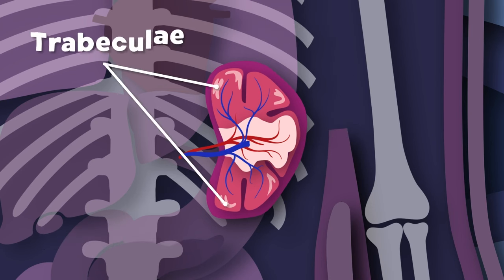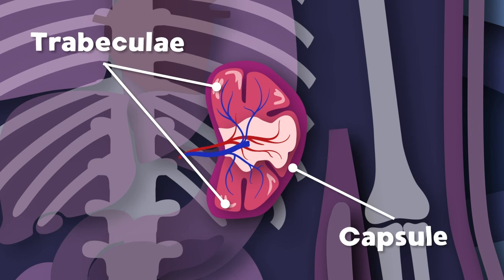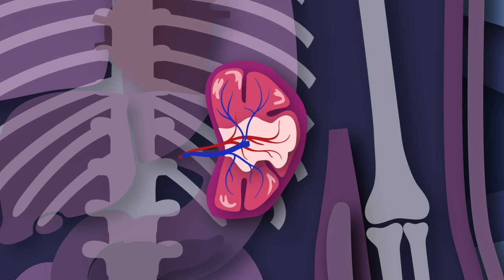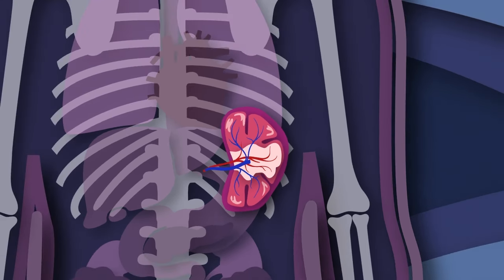The trabeculae of the spleen is the framework within, which is attached to the capsule. It surrounds the spleen and it's thin. Vascular sinusoids are vessels that drain into pulp veins. We'll learn how this all works, but first let's sing again.